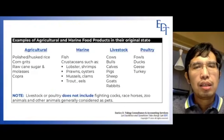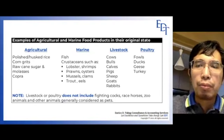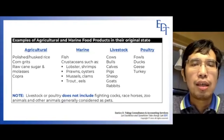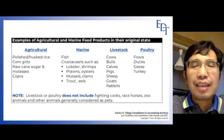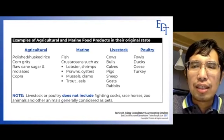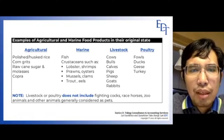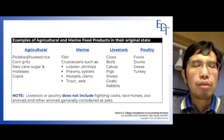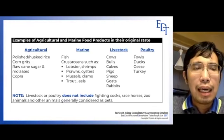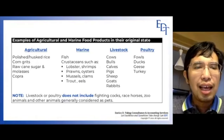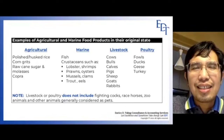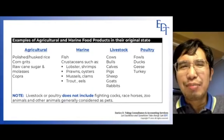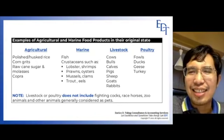In this slide, before we proceed to the next VAT exemption, you are given examples of agricultural and marine food products in their original state. Please read those. I would like you to take a look at the bottom portion of the slide. There is a note: livestock does not include fighting cocks. You might say fighting cocks can be eaten — yes, but they are not intended for human consumption. So when you buy fighting cocks, it's subject to VAT.